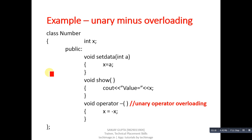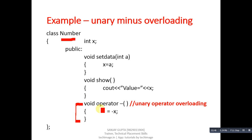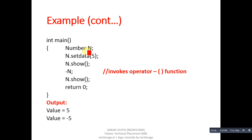Here is a complete example in C++. The class is named 'number' with one attribute X. The setData function assigns the received value into X, and the show method prints the value of X on the console. Then void operator-() is the overloaded function — the minus operator is overloaded to work as a unary minus, changing X: if X is positive it converts to negative, and if negative it converts to positive, assigning -X back into X.